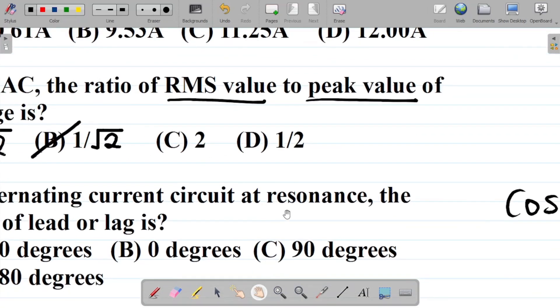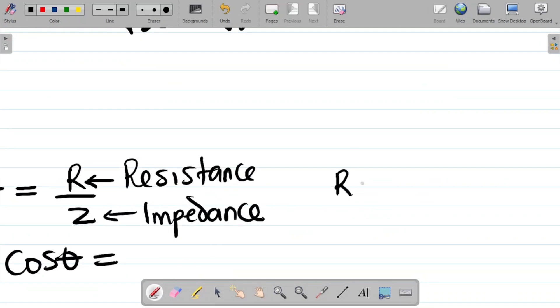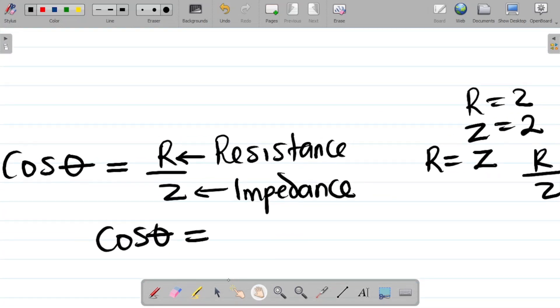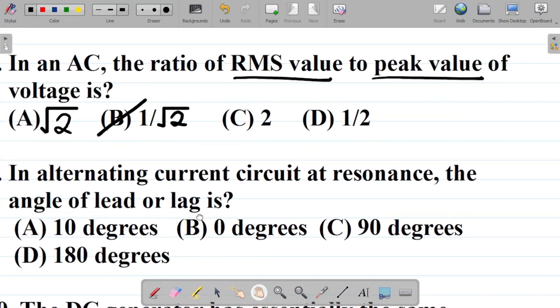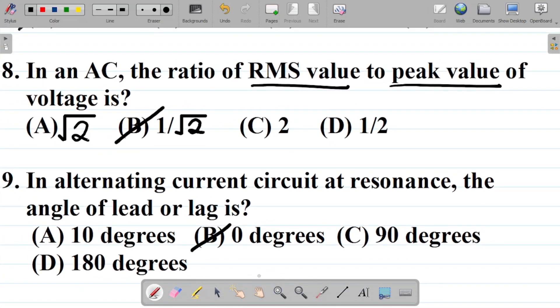We have that cos theta is equal to R over Z. They said at resonance. What happens at resonance? At resonance, the resistance is equal to the impedance. So R is equal to Z. If R equals Z, they have the same value. Hence R over Z would be equal to 1 as your answer. At resonance, R equals Z, so R over Z becomes 1. To get the value of the angle theta, I'll take cos inverse of both sides to become cos inverse of 1. The cos inverse of 1 is 0. So the angle of lead or lag is 0 degrees. That's the answer.